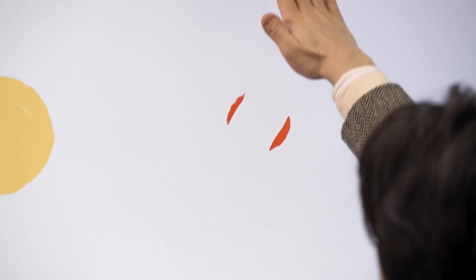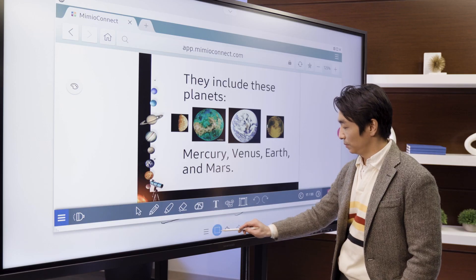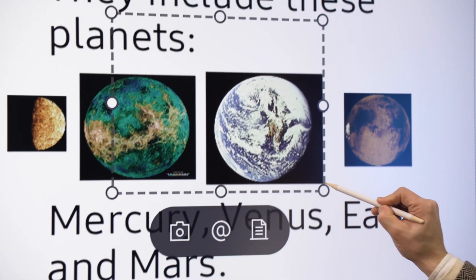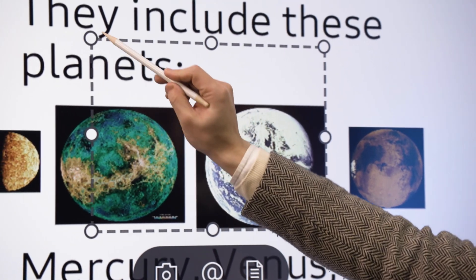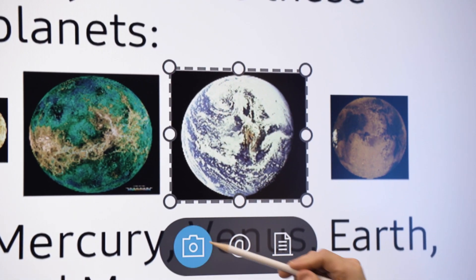Erase old ideas or edit new ones with a touch of a finger or swipe of a palm. When using the versatile Samsung interactive display, users can quickly and easily select, move, crop, capture, and edit any images, then save it for later.